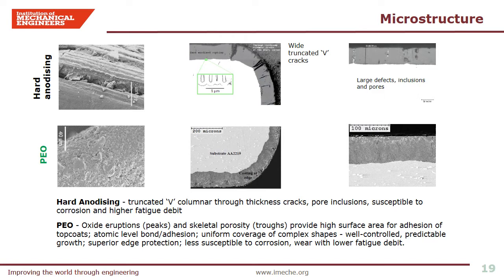This slide shows SEM images of the hard anodized coating and the PEO coating on aluminum alloy, typical of how the coatings would appear on bends and sharp corners. While in flat regions both coatings appear uniform in thickness, it is the corners that differentiate the two coating types. The left images are the surface SEM while the right images are cross-sections on the same regions. The hard anodized coating on corners is well known to suffer through-thickness, wide-opening truncated V-cracks. These defects are of major concern due to large fatigue drops as well as becoming regions for premature corrosion initiation.